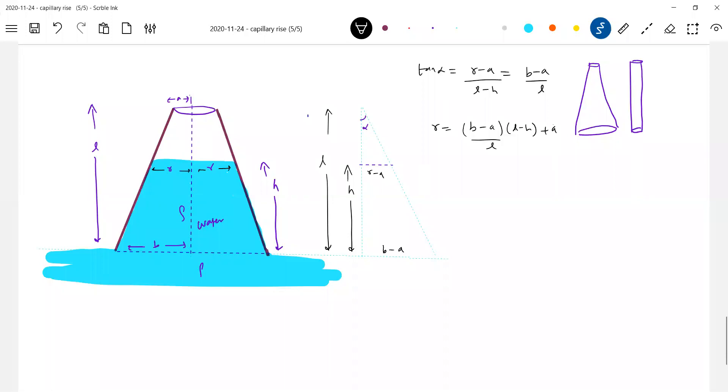H is equal to 2 S T by rho g R. So let's assume that angle of contact 0 degrees. What is R? This total thing. This you have to substitute: rho g B minus A L minus H by L plus A. Again we have H in the equation that has to be solved.